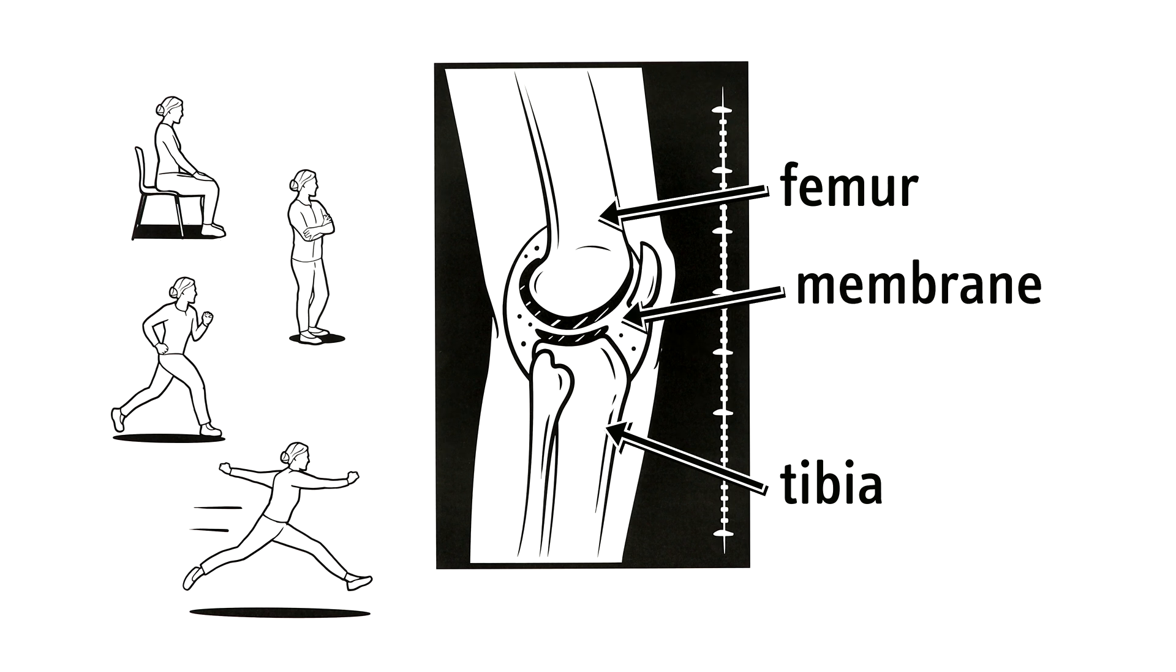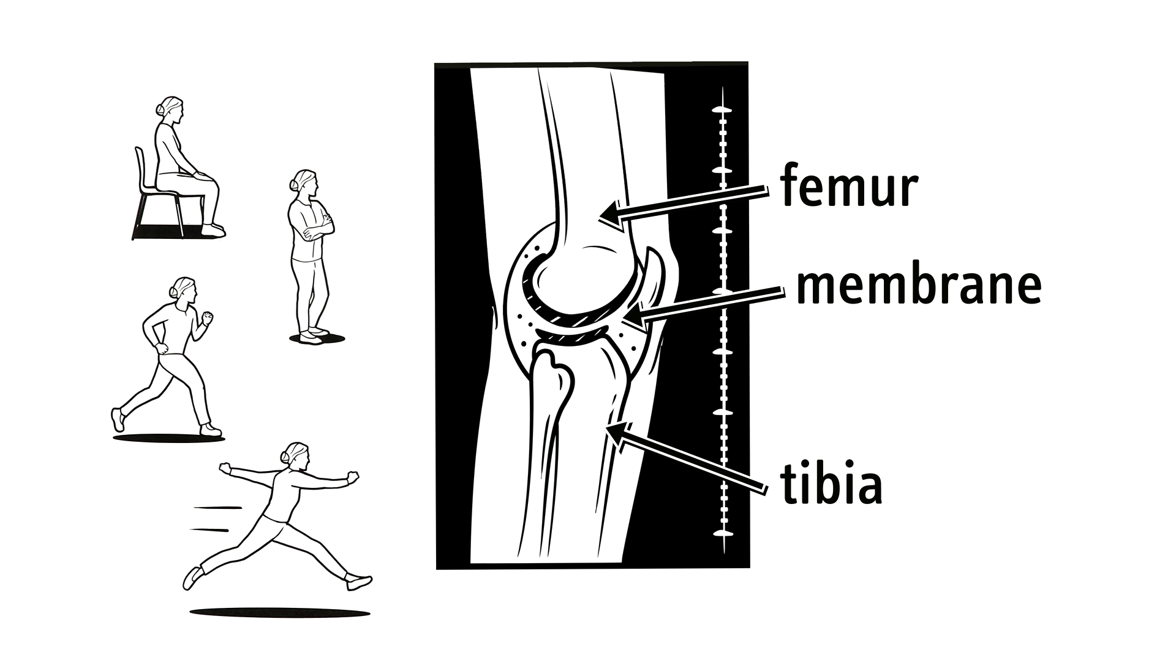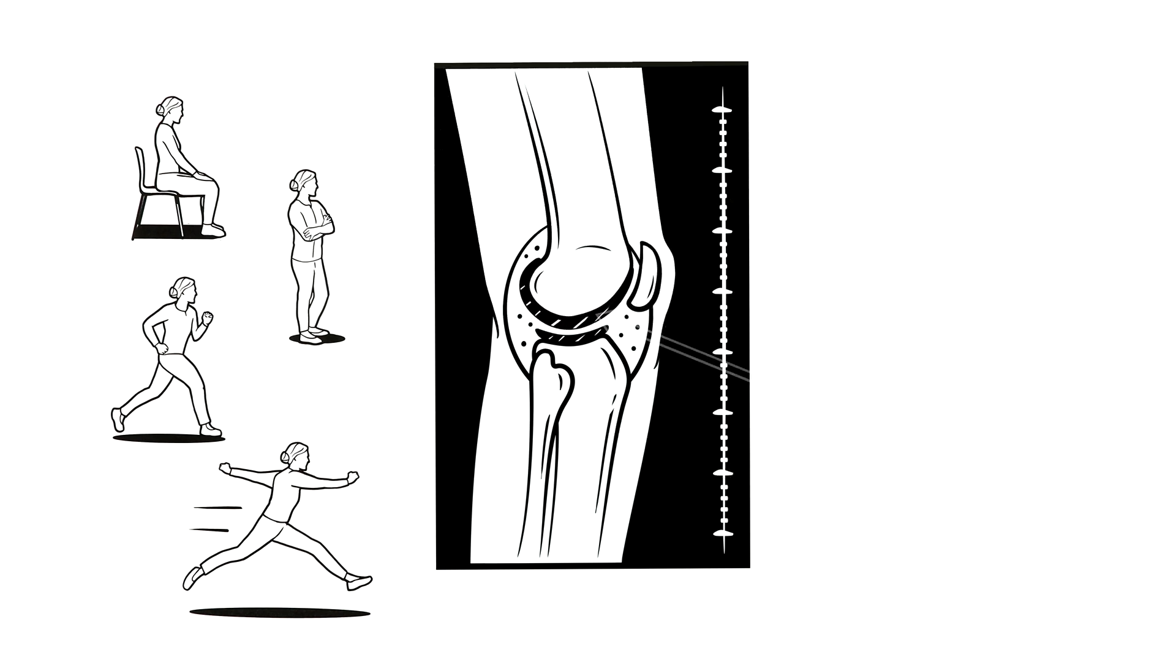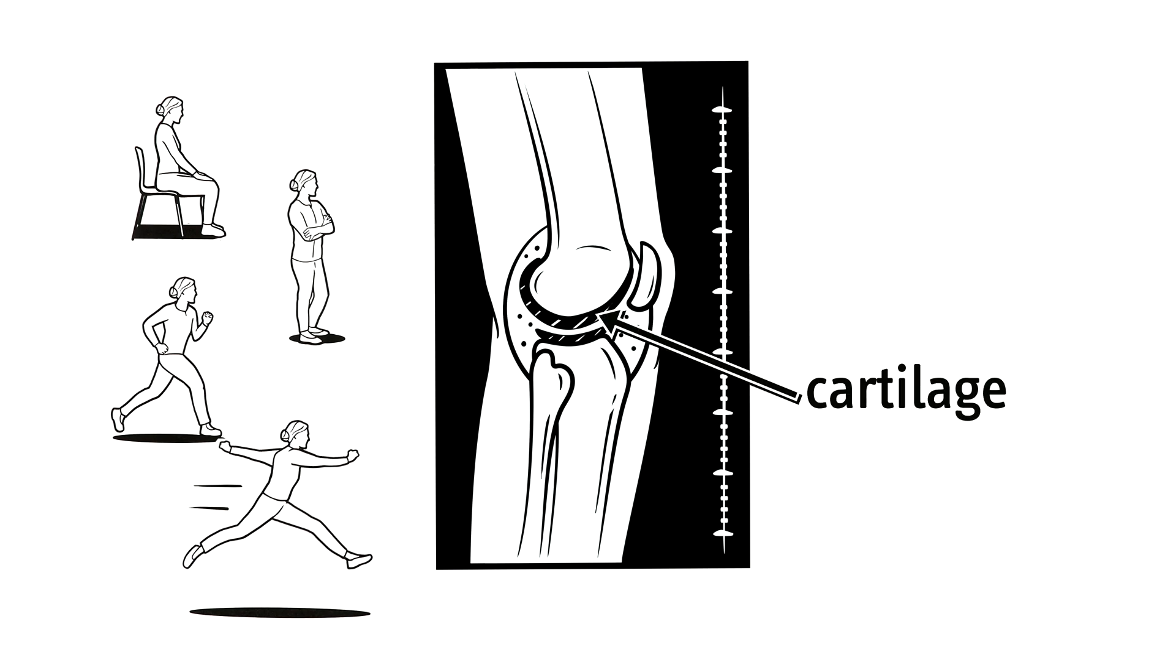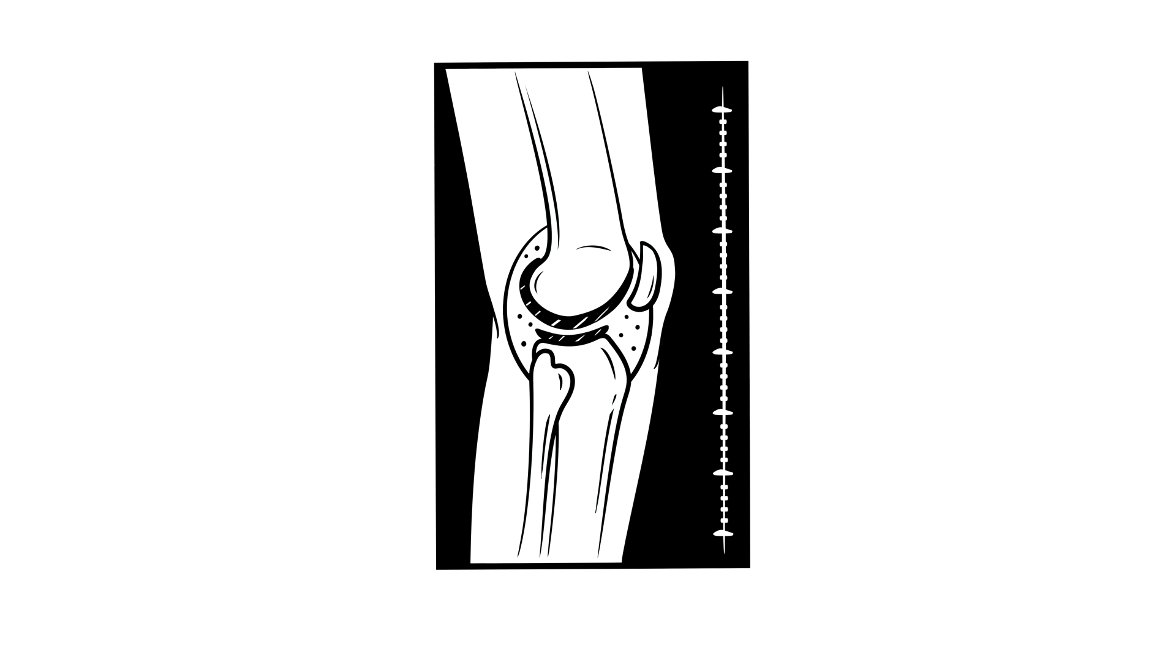The membrane around the joints ensures that they move smoothly, just like a well-oiled door hinge. And the cartilage is like a shock absorber to soften our jumps and movements. This is what a healthy joint looks like.